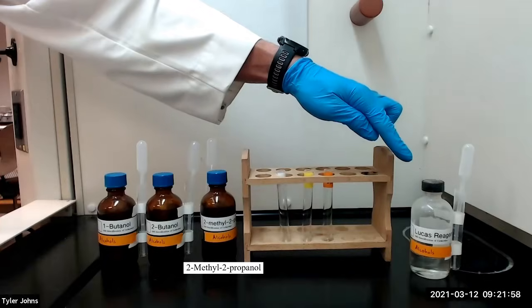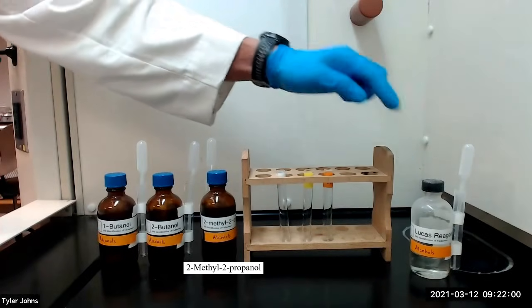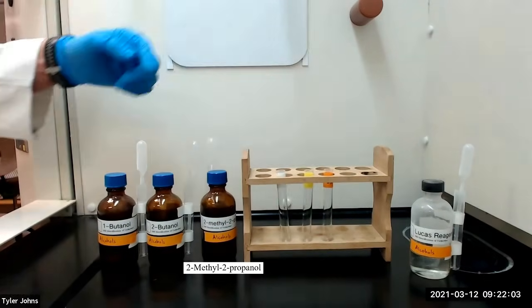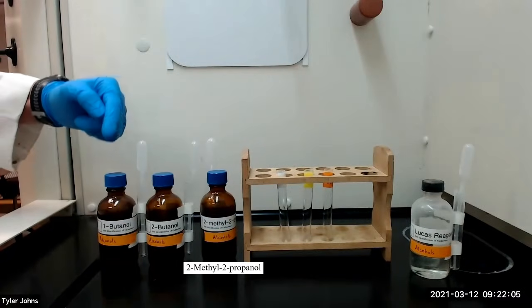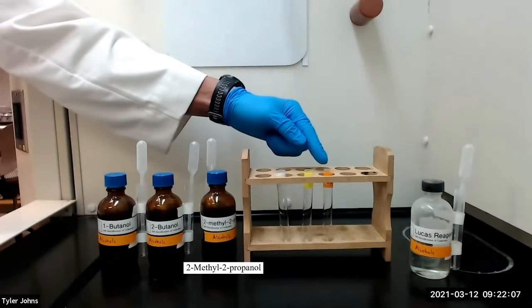We will begin by placing 2 mL of the Lucas reagent in 3 separate test tubes. We will then add 3 to 4 drops of the alcohols into the corresponding test tubes.